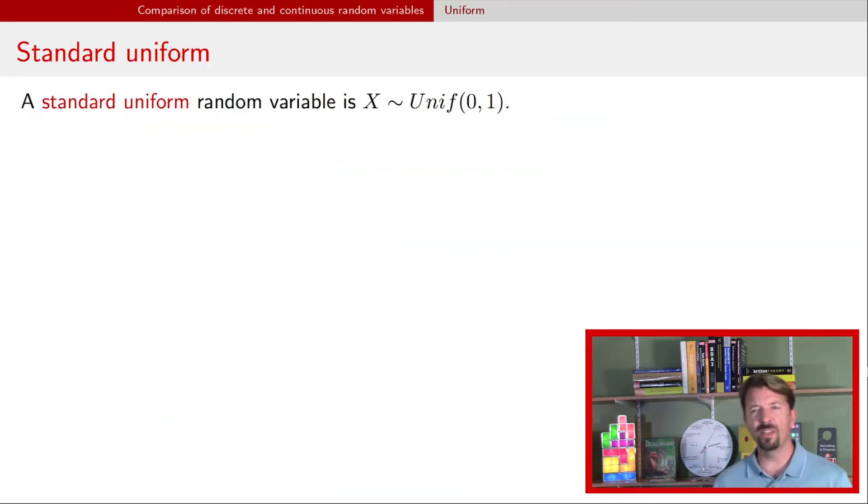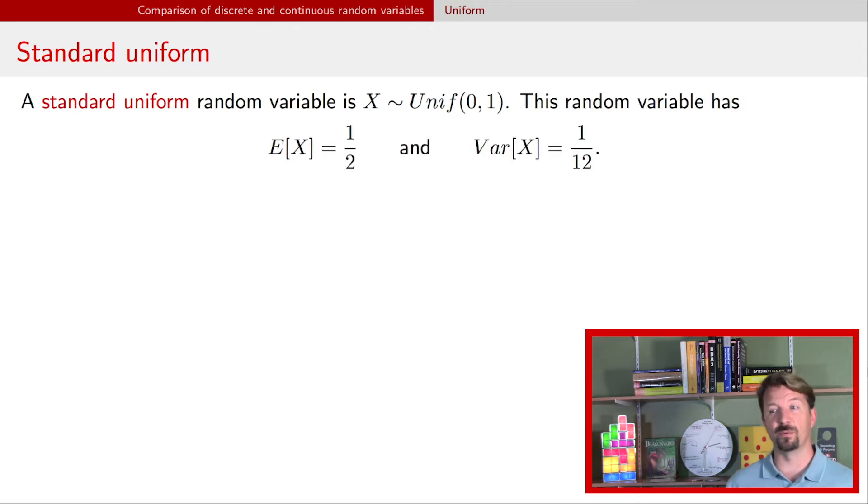The most common uniform random variable is called a standard uniform random variable and it's uniform on the range between zero and one. Using the formulas on the previous slide we can find that the expectation is one half and the variance is one twelfth.